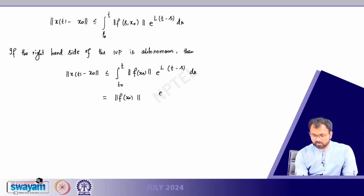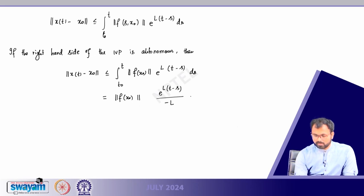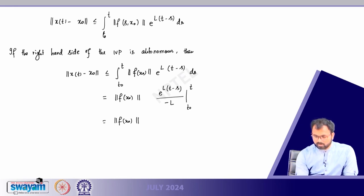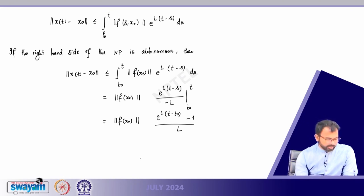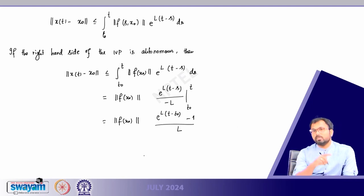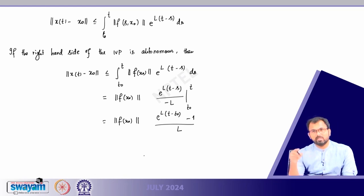Performing the integration of e^{L(t-s)} with respect to s gives [e^{L(t-s)} / (−L)] evaluated from t₀ to t. When s = t the term is 0, and evaluating at t₀ gives e^{L(t-t₀)}. So the result becomes ‖f(x₀)‖ · [e^{L(t-t₀)} - 1] / L. This is the required expression for the autonomous case, and in the previous class I mentioned this when stating Theorem 2, where we can specifically write what T(r) will be.